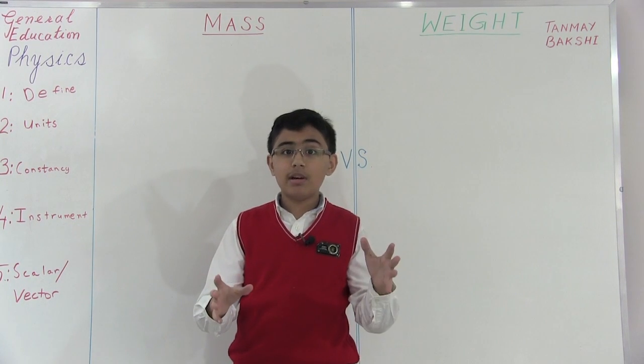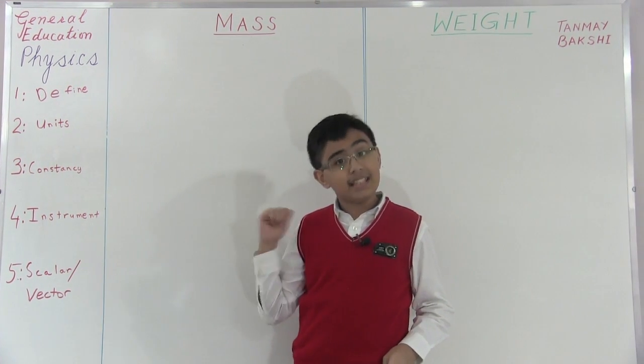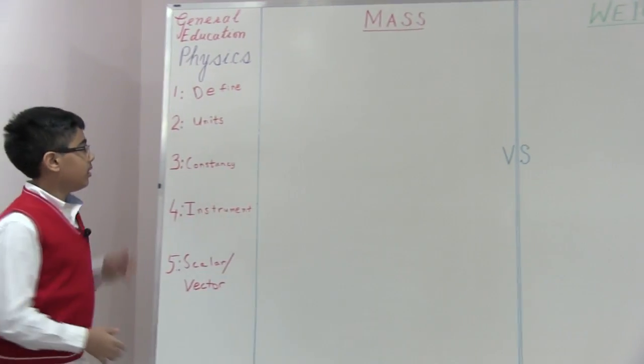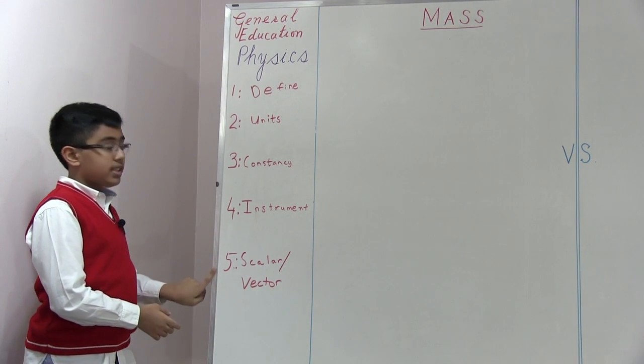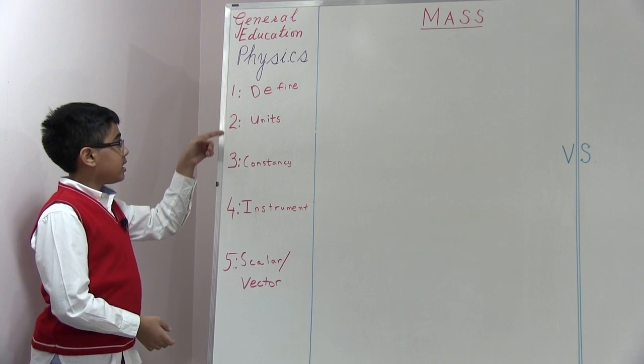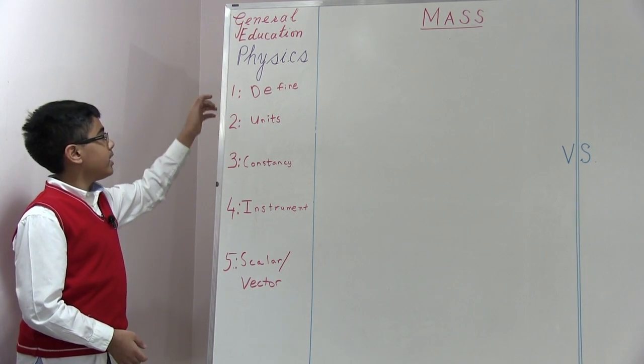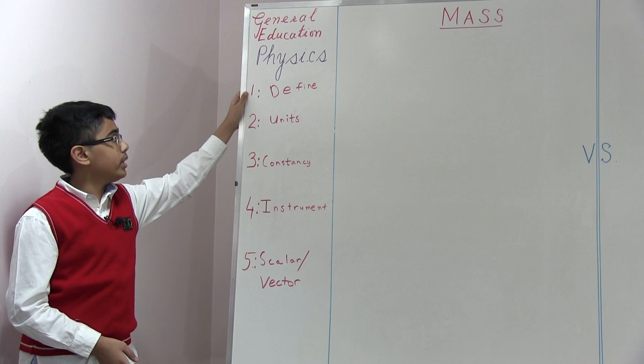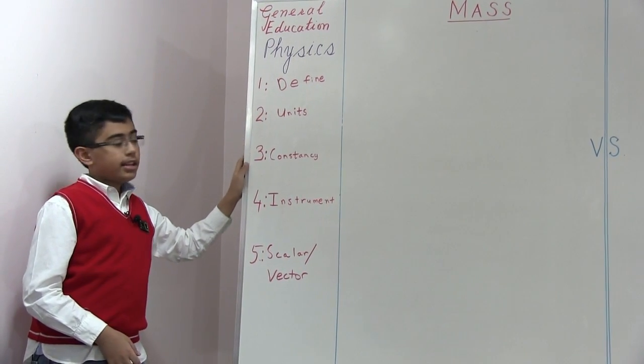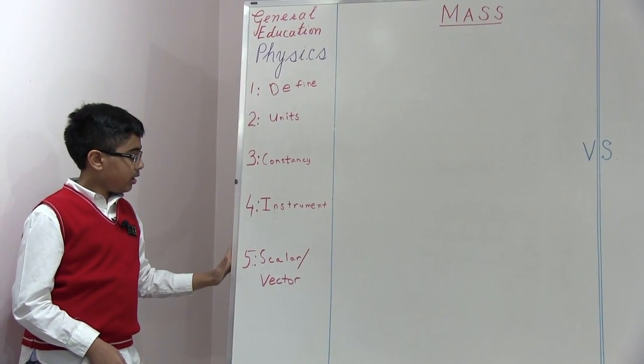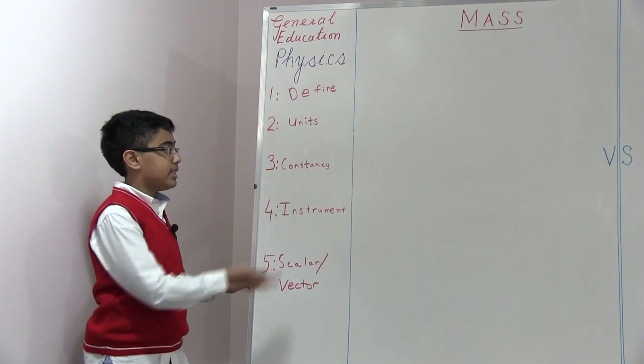So now I am going to try my best to answer the question and also explain the difference between mass and weight. Let's get started. And so these are the things I am going to be explaining in this video. In this video I am going to define what mass and weight are, tell you the units that you use for both, tell you about the constancy of mass, tell you the instruments that you use to measure them, and also what the difference is between scalars and vectors and how they are related in helping us see the difference between mass and weight.